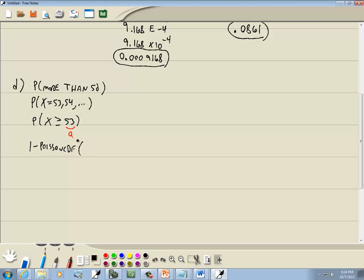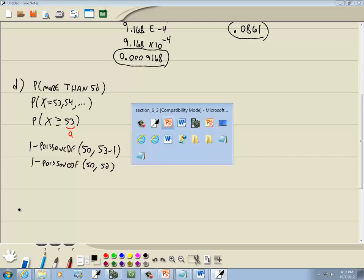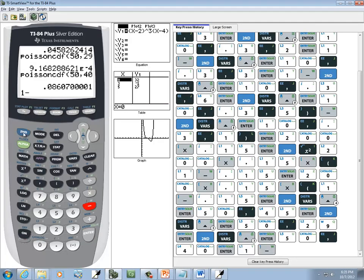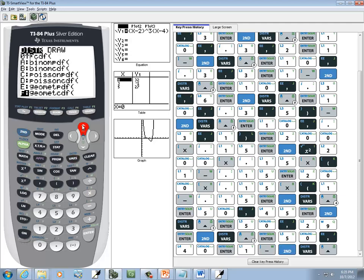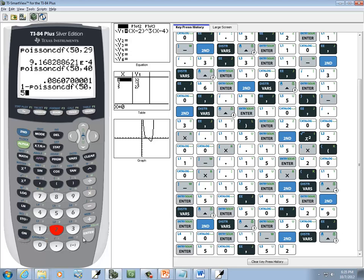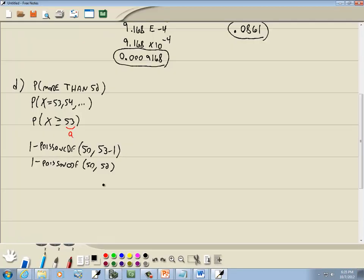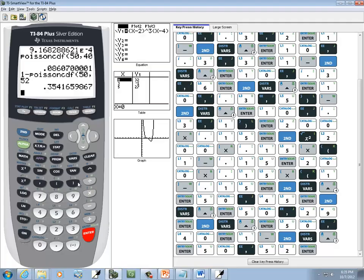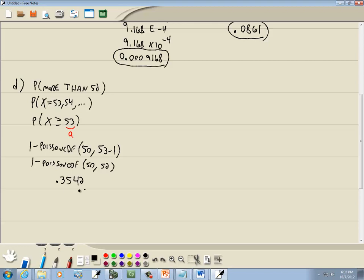So 1 minus Poisson CDF, mu, which was 50. And then A minus 1. So 53 minus 1. So we've got 1 minus Poisson CDF, 50, 52. So we've got 1 minus second vars, Poisson CDF, 50, 52. And our answer is 0.3542, rounding to four decimal places.